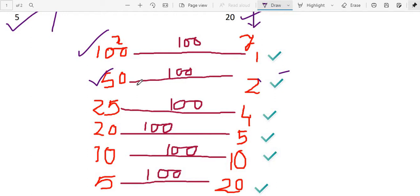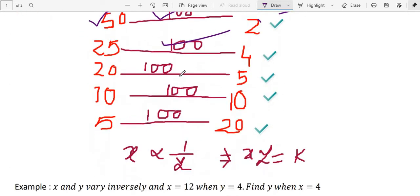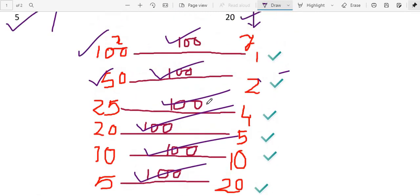Now in this case, if you observe: 100 into 1 is 100, 50 into 2 is 100, 25 into 4 is 100, 20 into 5 is 100, 10 into 10 also 100, then 5 into 20 also 100. So in case of inverse variation, the product of the variables is constant.